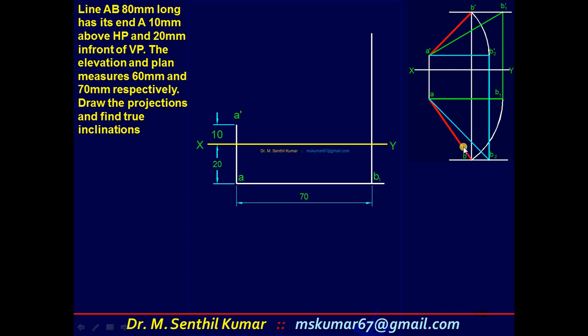AB1 I have drawn. The length of AB1 is equal to the length of AB, that is the length of top view, so it is given here with 70. Draw this line, draw a projector, and set the compass to 80.